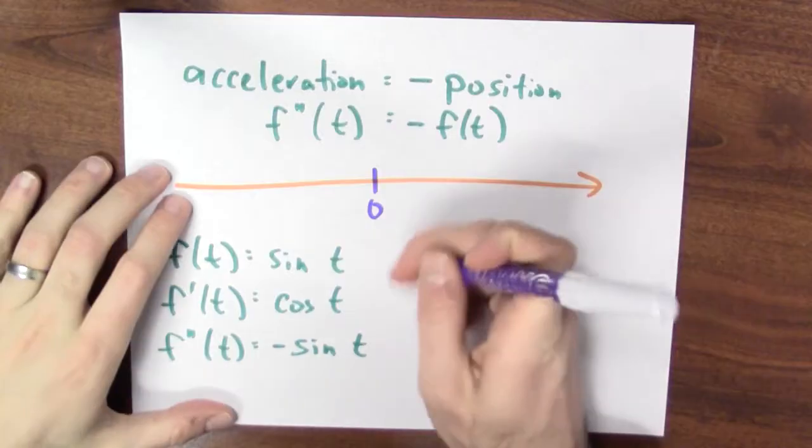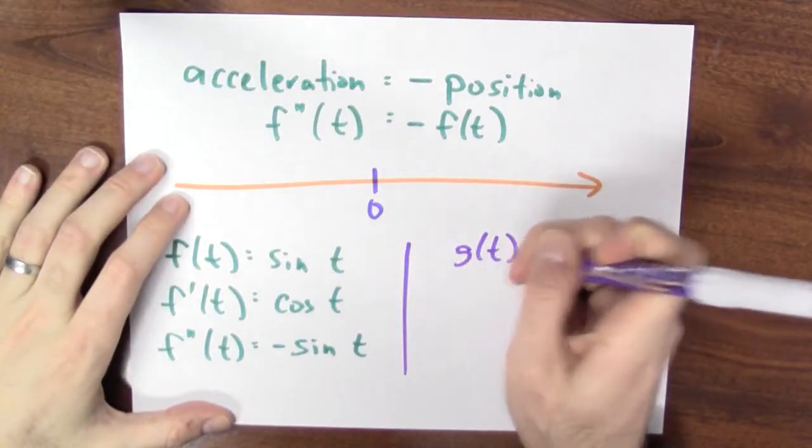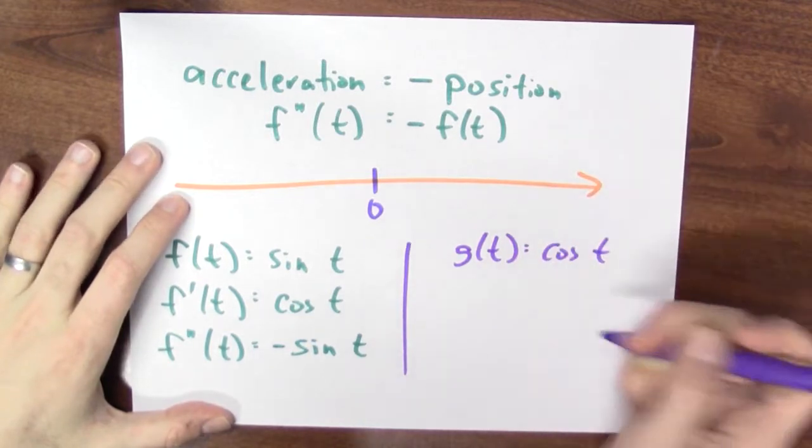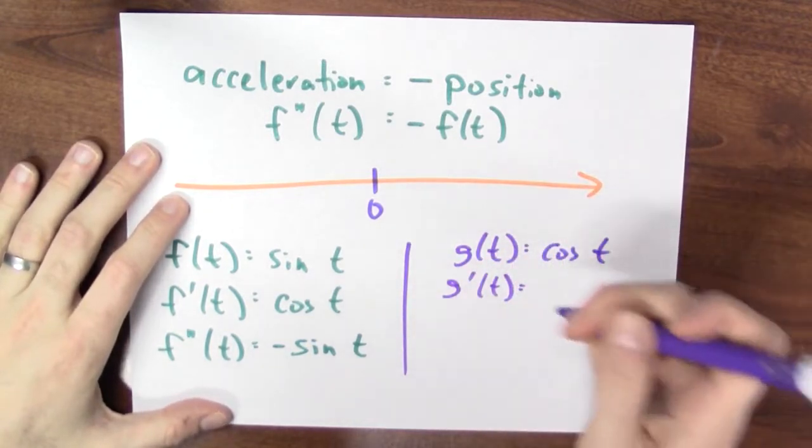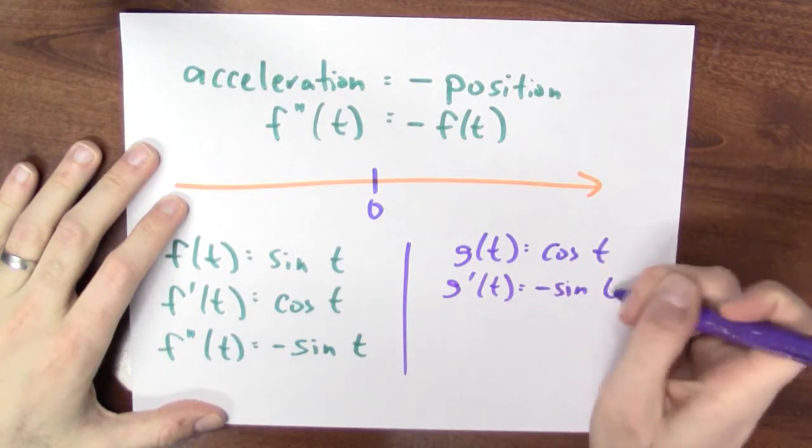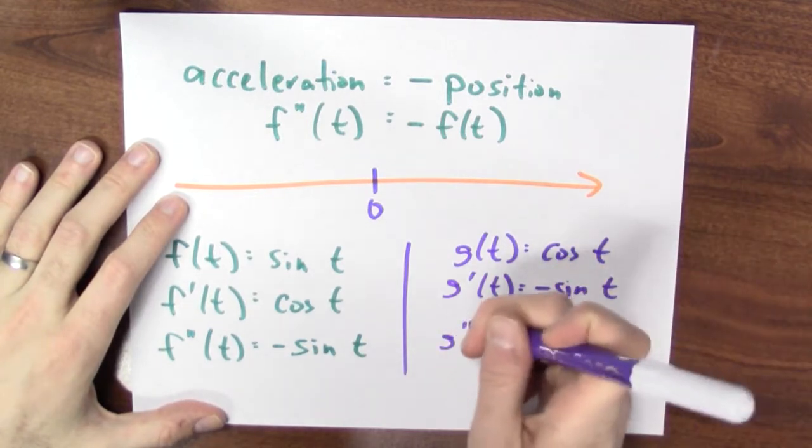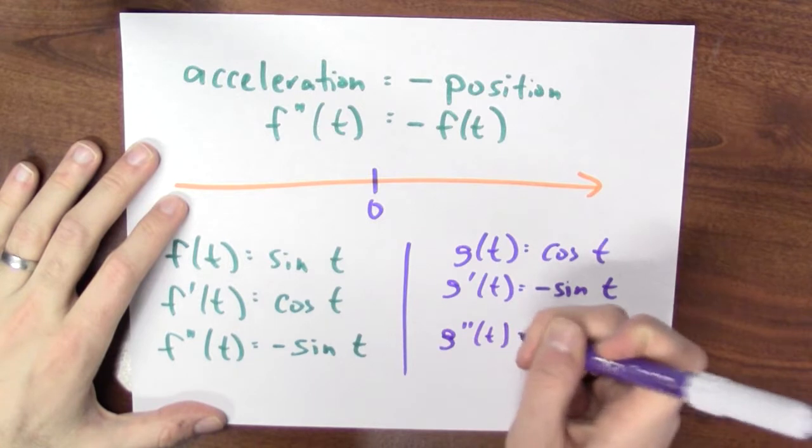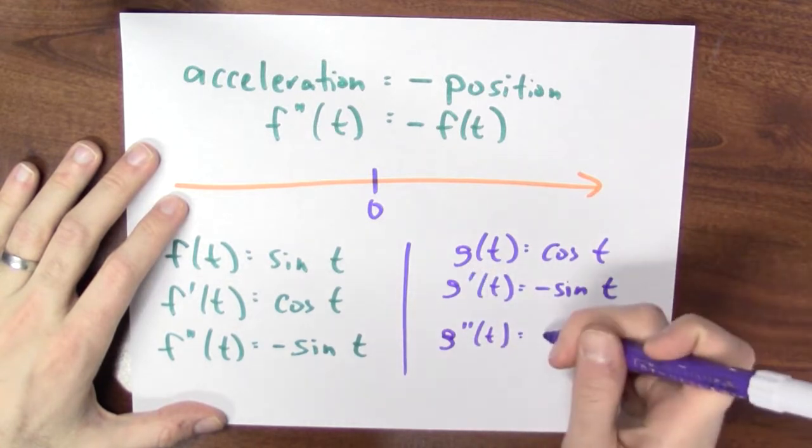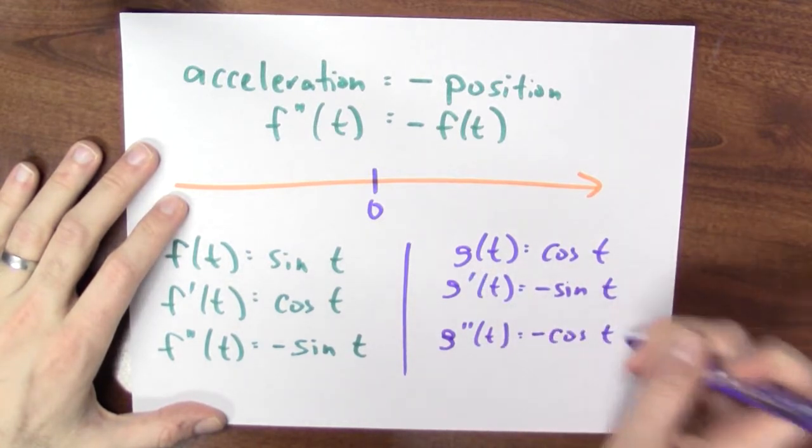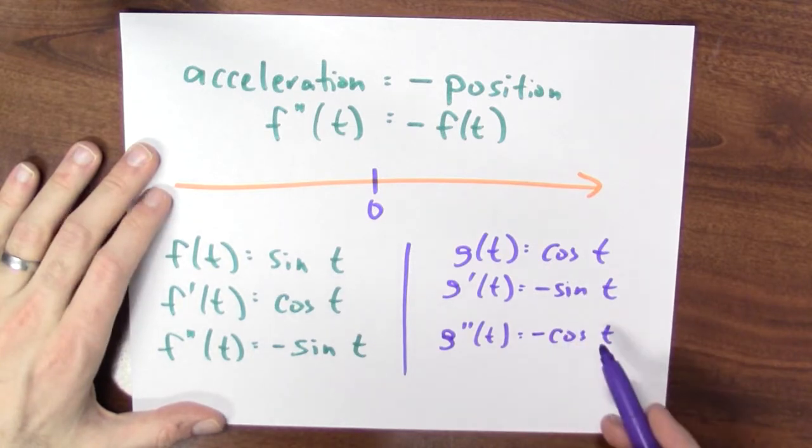And we know another function just like this. If g of t is cosine of t, then g prime of t is minus sine t. But then g double prime of t, the second derivative of cosine, is just minus cosine of t, because the derivative of sine is cosine.